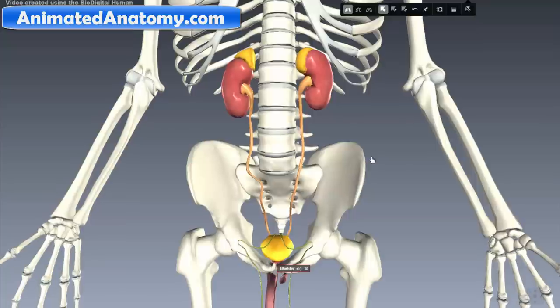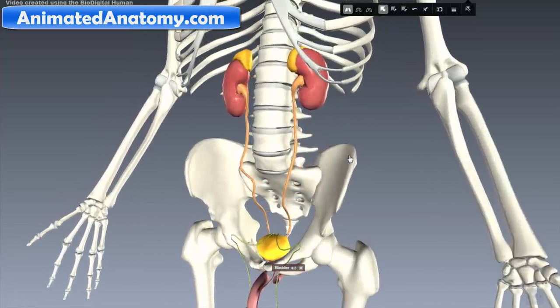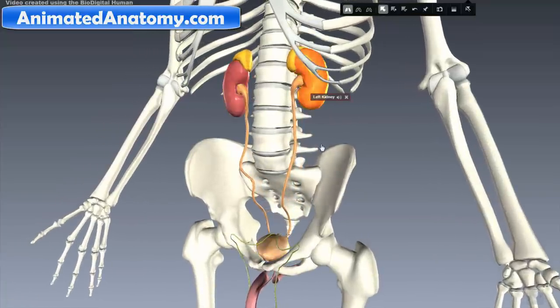The urinary system, also known as the renal system, consists of two kidneys, the right one and the left one.